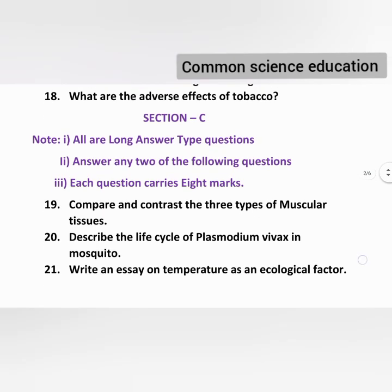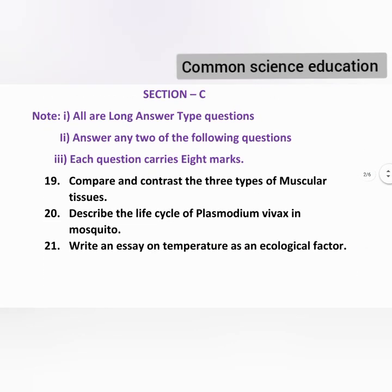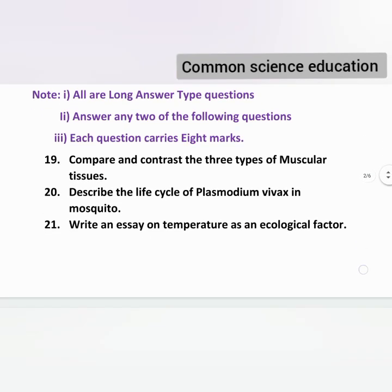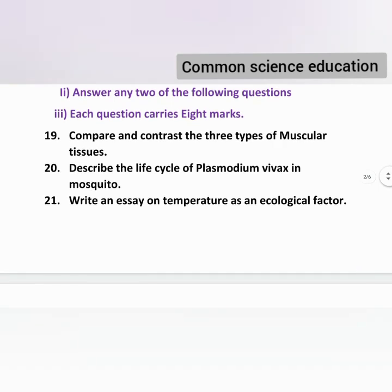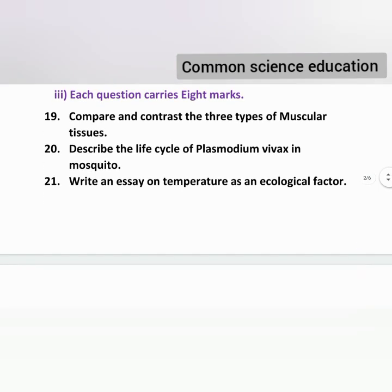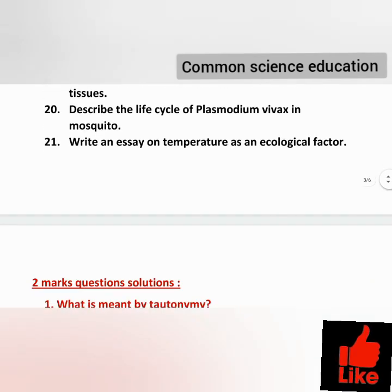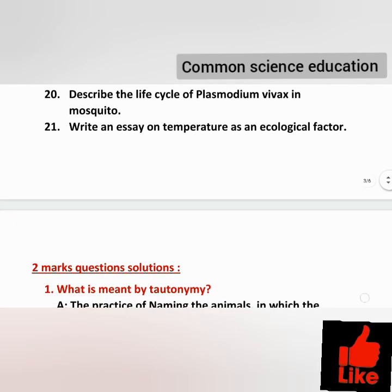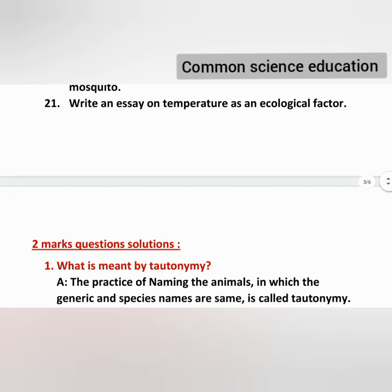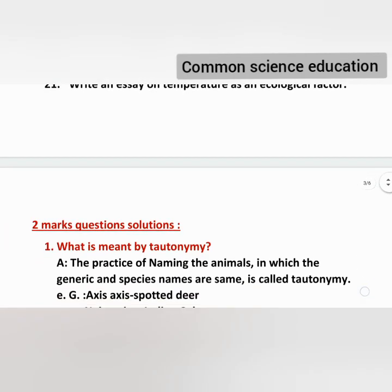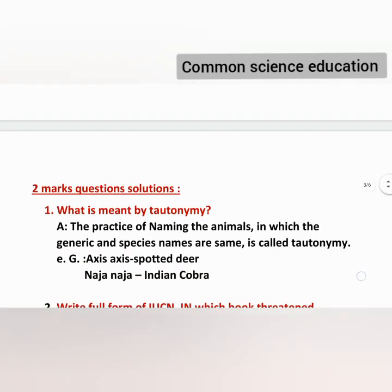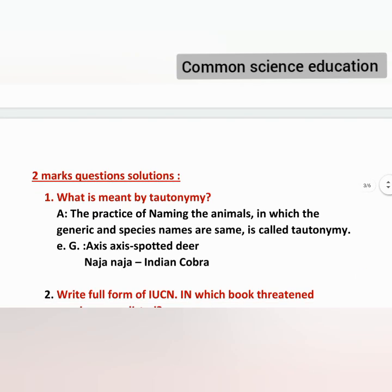In this model paper, the important topics include: compare and contrast the three types of muscular tissue, Plasmodium vivax, and temperature as an ecological factor. These questions have the same answers. If you have two lessons prepared, you are in good shape; then you have to do the third lesson.